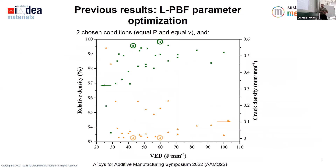In the first step of my PhD, we did a parametric study. We studied the influence of laser power, scanning speed, and hatch distance on the outcome of the parts. Here I have plotted all the different conditions we studied. In green we have the relative density, and in orange the crack density, and out of all these conditions we selected the two best ones in terms of both relative density and minimal crack density.